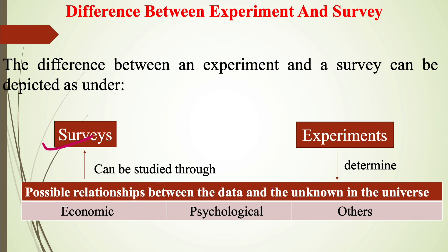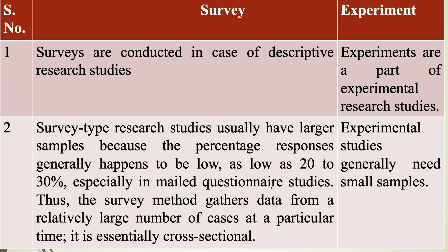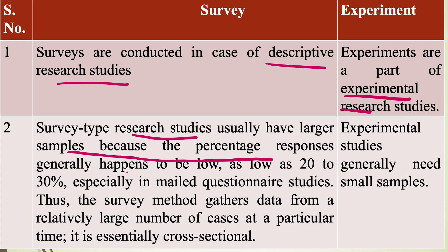Surveys are conducted in the case of descriptive research studies, whereas experiments are part of experimental research studies. Survey-type research studies usually have larger samples because the percentage of responses generally happens to be low — as low as 20 to 30 percent, especially in mail questionnaire studies. Thus the survey method gathers data from a relatively large number of cases at a particular time; it is essentially a cross-sectional study. Whereas experimental studies generally need small samples.